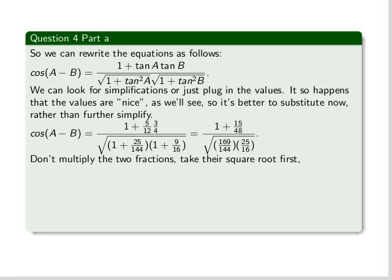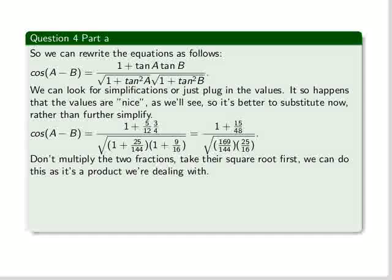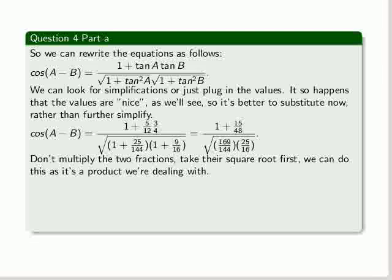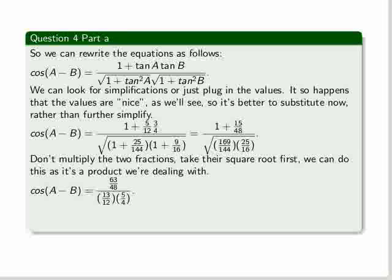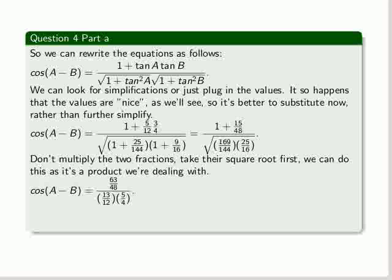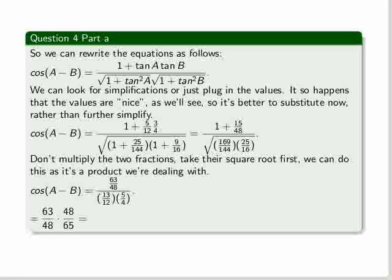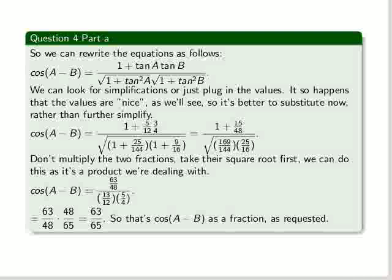Now, don't multiply the two fractions here. Take their square root first, because they behave quite well, because the square root of 169, for example, is 13. So we get the cosine of A minus B as shown, and we multiply the denominator there and get 65 over 48. So then it's the product of 63 over 48 times 48 over 65, so we get 63 over 65, and that actually is cosine A minus B as a fraction, as requested.